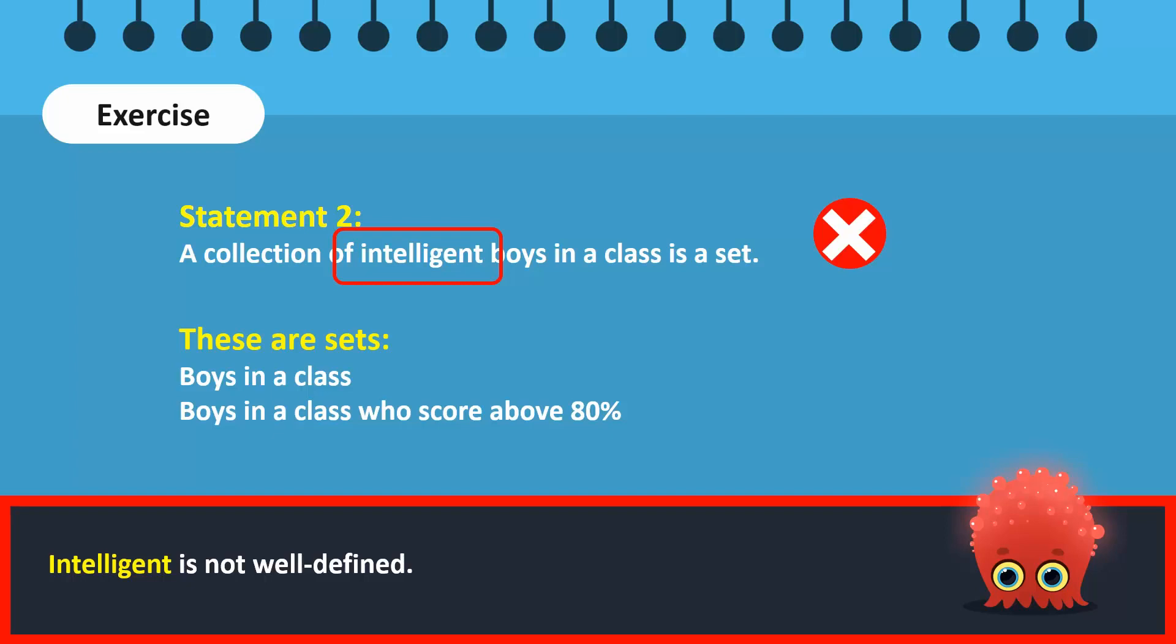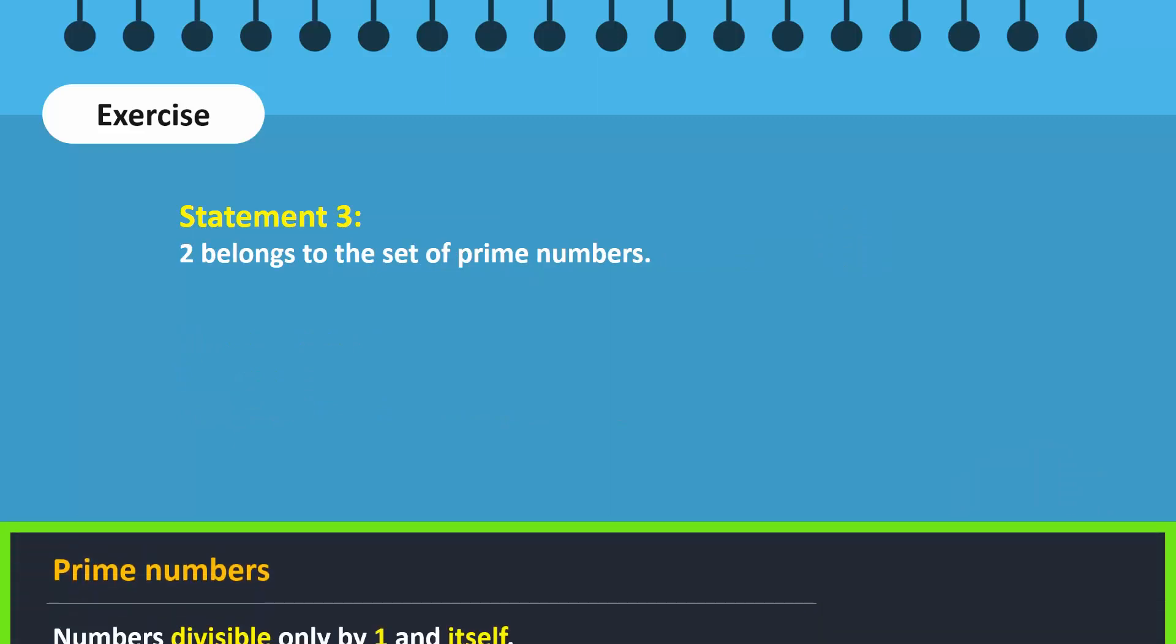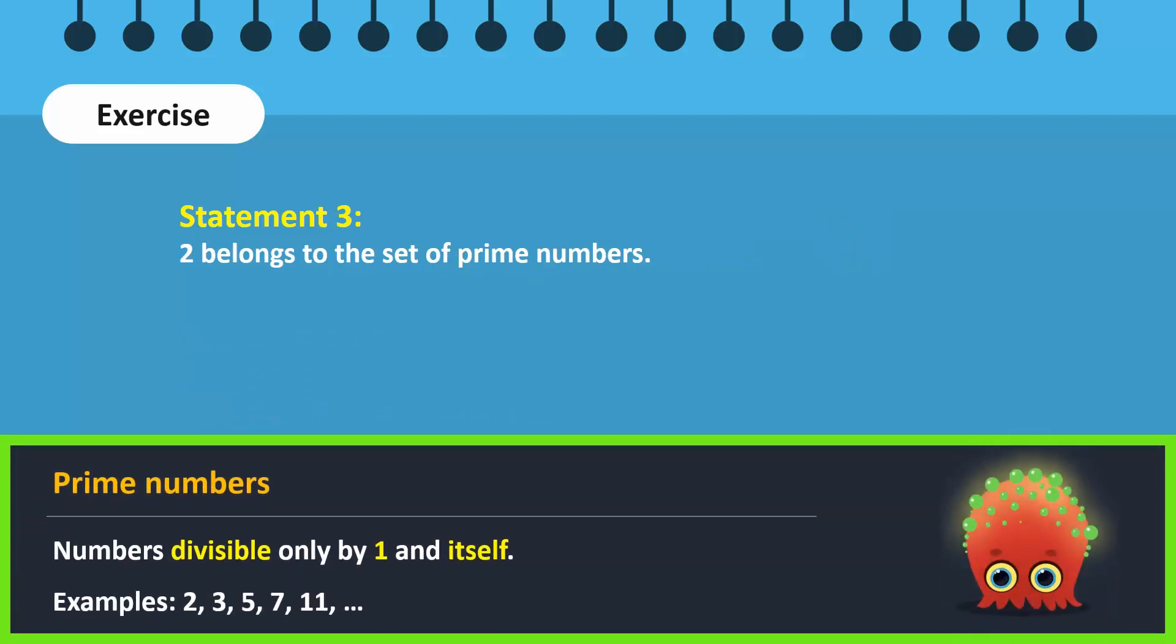For statement three, we have to know what prime numbers are. Prime numbers are numbers that can only be divided by one and itself. Therefore, the set of prime numbers include elements like 2, 3, 5, 7, 11, etc. Therefore, this statement is the only correct statement.